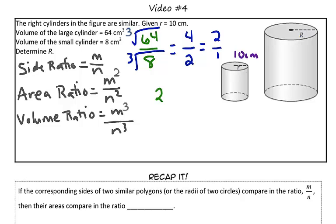We know that 2 over 1, or the ratio of their corresponding parts, their corresponding sides, in this case, it's the corresponding radii, is equal to, well, we're using the larger cylinder in the numerator and the smaller cylinder in the denominator.